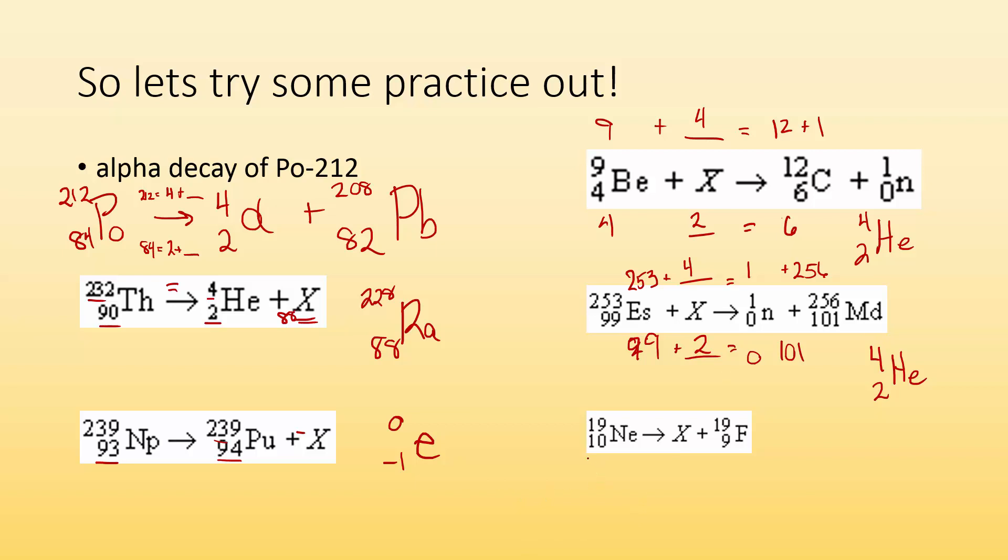Last one. I got neon, atomic number 10, decaying into some particle, and then fluorine. 10 has to equal some number and 9. That's going to tell me that I need a positive 1 there. And 19 has to equal some number and 19. So that number is going to have to be 0. I got some particle with a positive 1 charge and a mass of 0. That's going to be a positron.